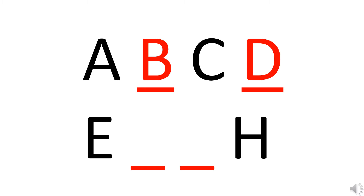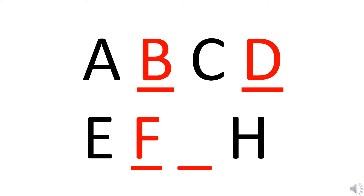Now that we have written letter D. What is after D? There is letter E, and again there is a blank. So what will come after E? F. Yes. So now we will write letter F. Now that we have written letter F, again there is a blank. What comes after F? G. Yes. So we will write letter G.